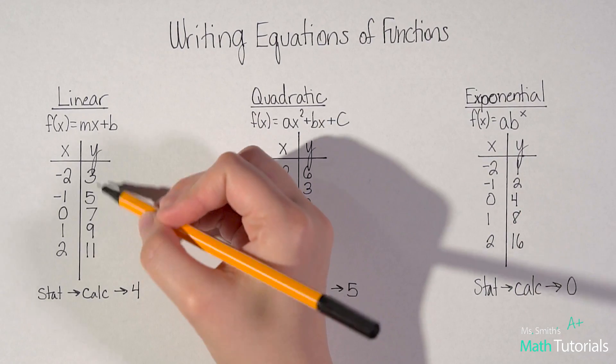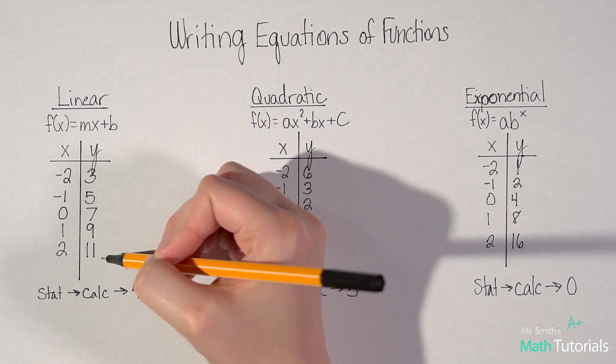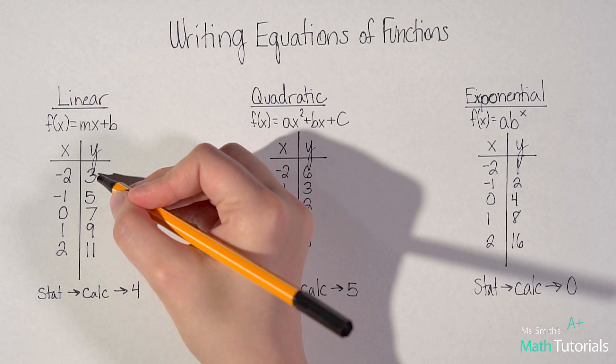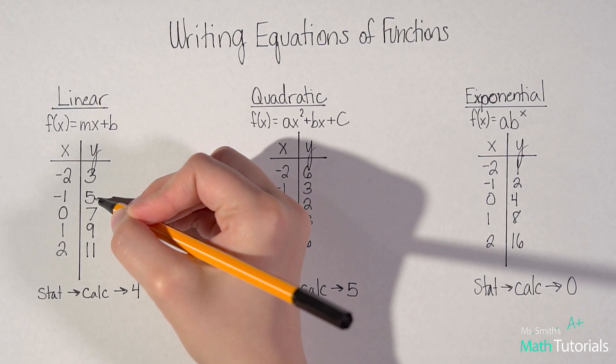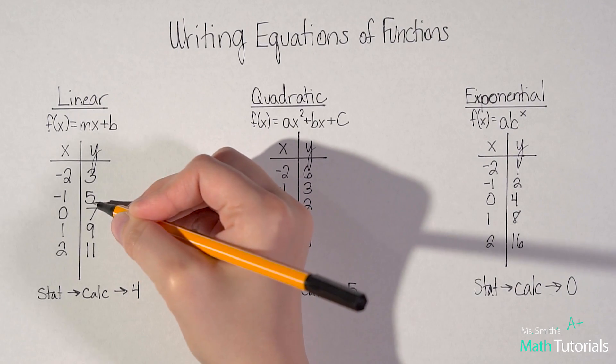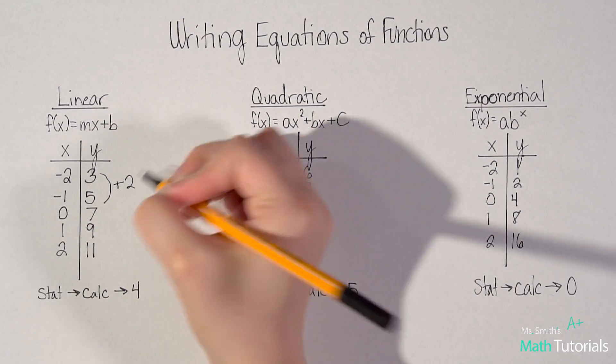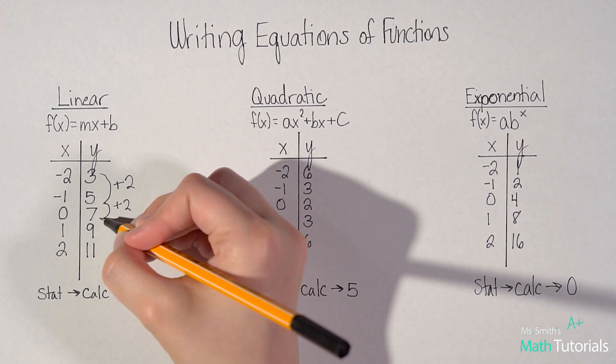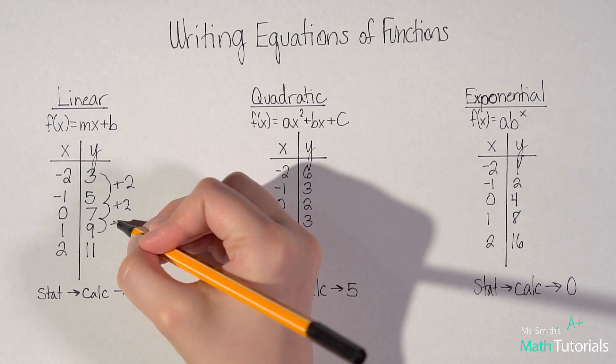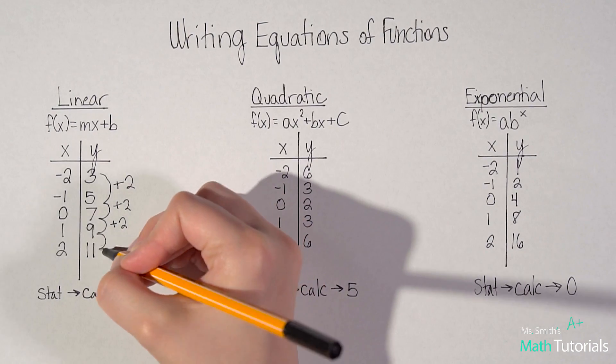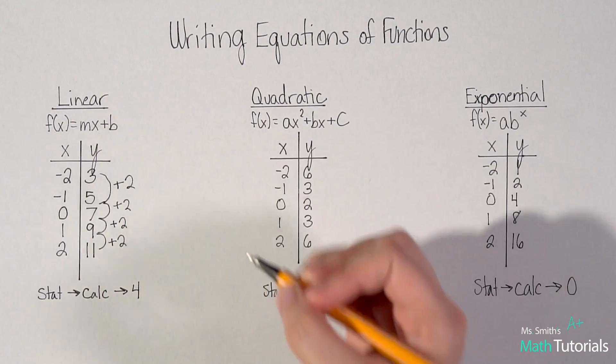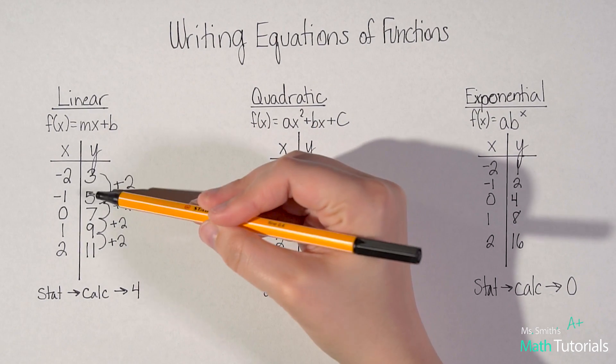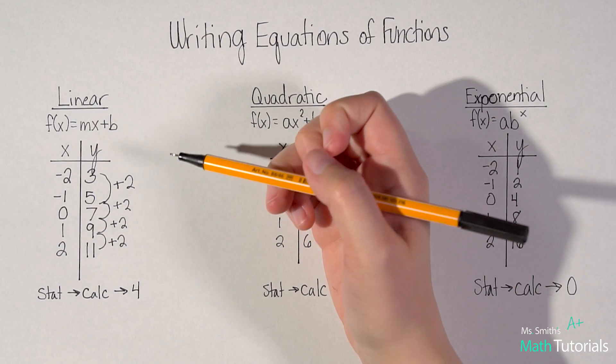I want to try to figure out what is this pattern. I'm going from three to five, so I added two. What about from five to seven? I also added two. From seven to nine, I added two again. And then from nine to 11, I added two. I can clearly see that this is increasing by two, adding two each time.